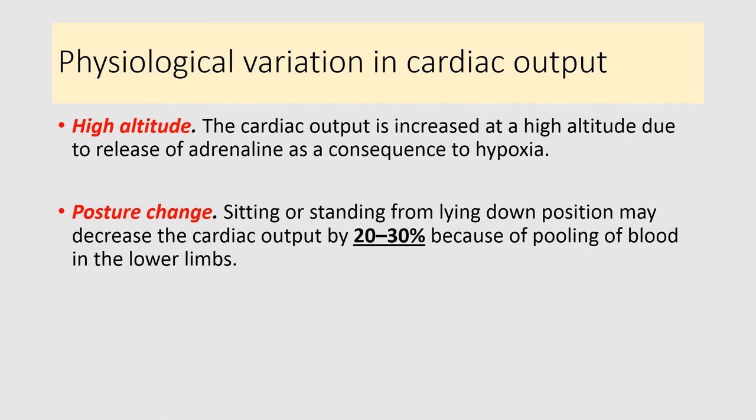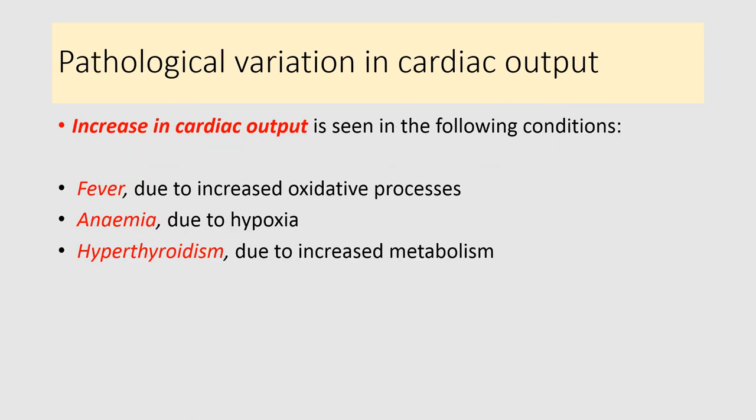Prolonged standing posture can decrease cardiac output and blood flow to the CNS, so people exposed to prolonged standing like traffic police are more prone to develop syncope due to decreased cardiac output. Changing from standing to supine posture increases cardiac output because of increased venous return. Physiological variations in cardiac output include age, sex, diurnal variation, exercise, excitement, meals, high altitude, and changes in posture.